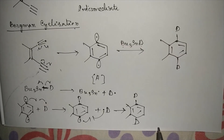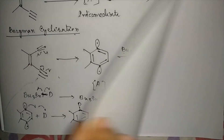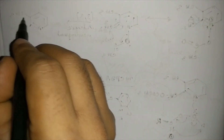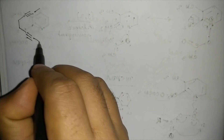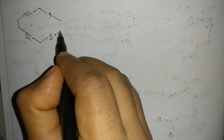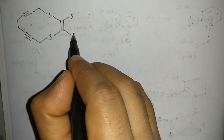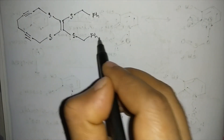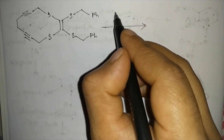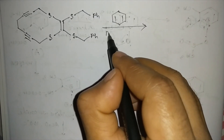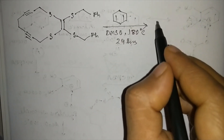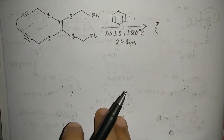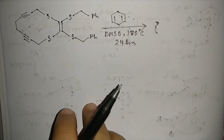So this is the mechanism. Now I am giving you a test-yourself problem. The substrate, if treated with DMSO at 180°C for 24 hours — what will be the product? This is your test-yourself problem. You can try this yourself and let me know in the comment box what the answer is.